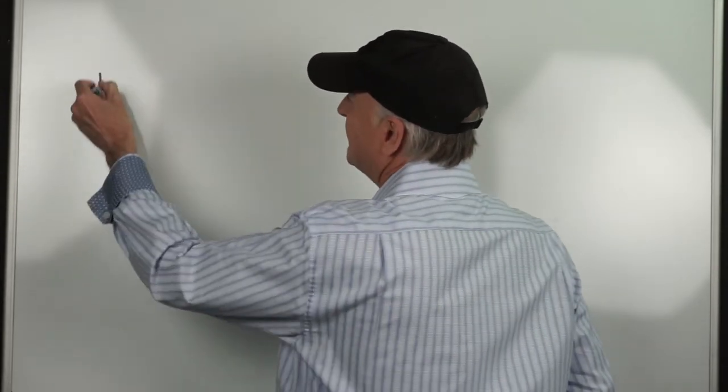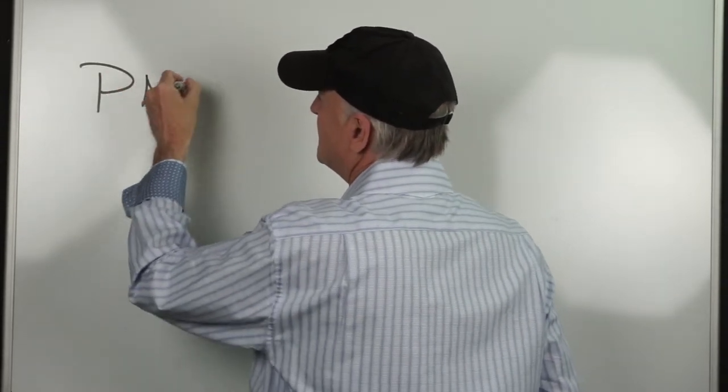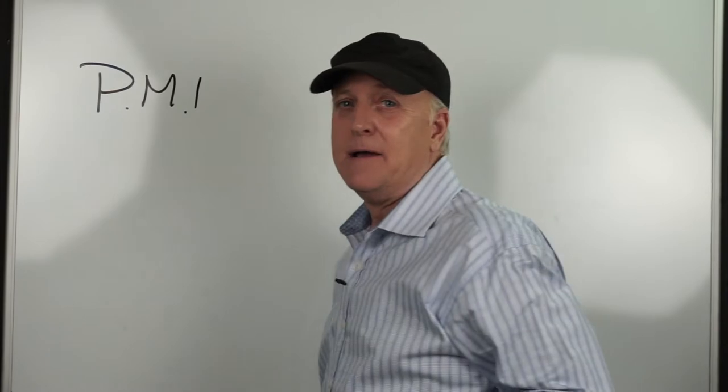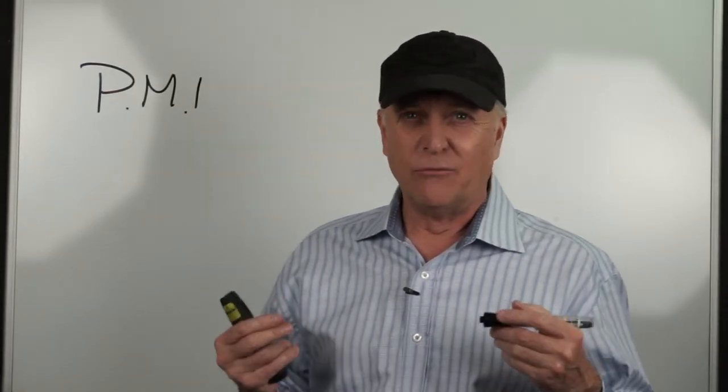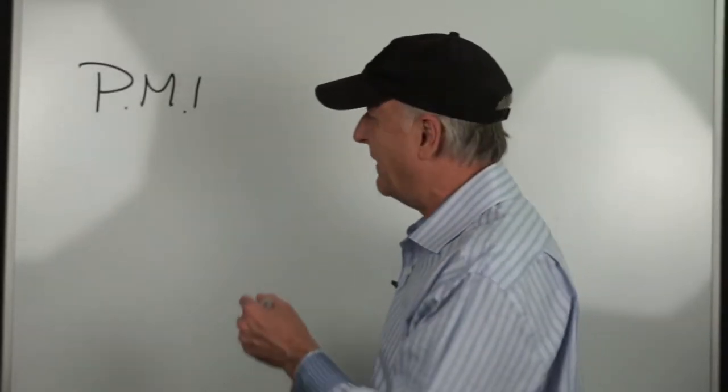The first one is what they call PMI. PMI protects the lender — very important to understand that, not you or the homeowner. It protects the lender against the risk that you will default on your mortgage. Conventional financing requires PMI when the loan-to-value ratio, or LTV, is over 80% of the appraised value.